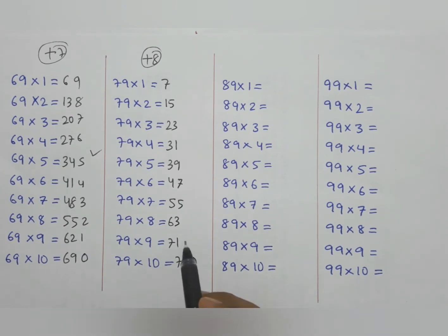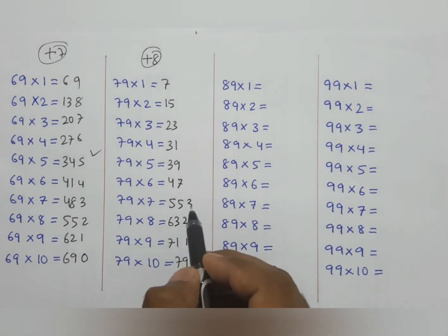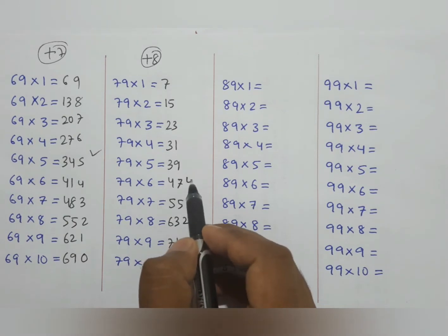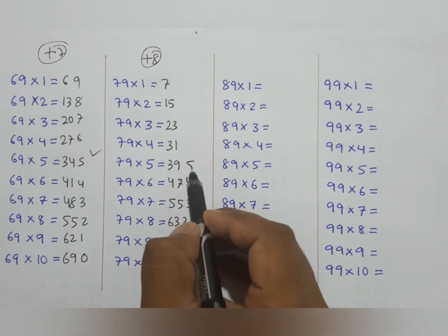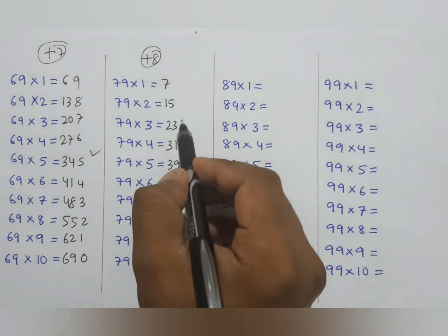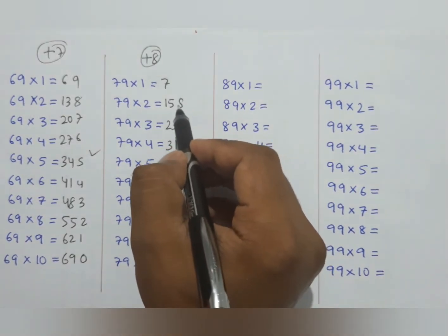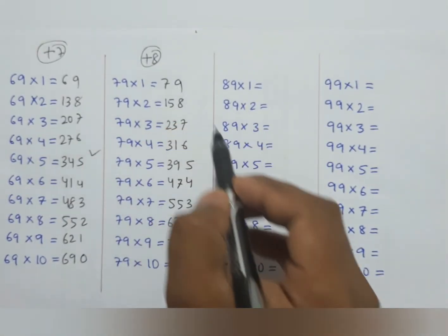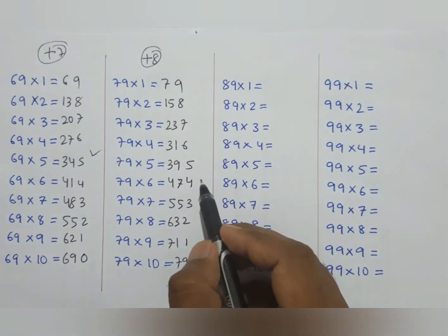And the right side here is 0, 1, 2, 3, 4, 5, 6, 7, 8, 9. So that completes the 79 times table.